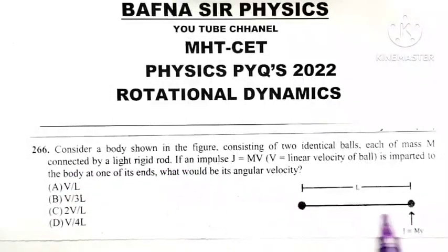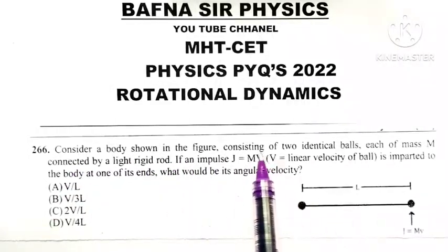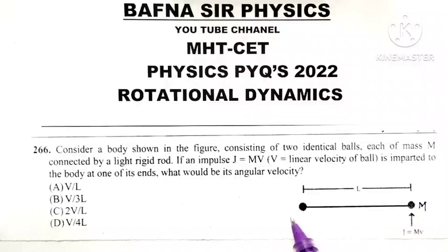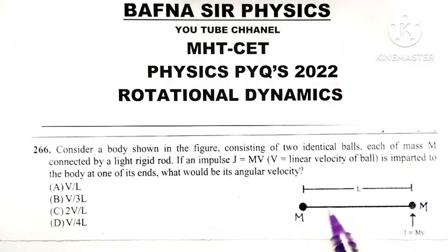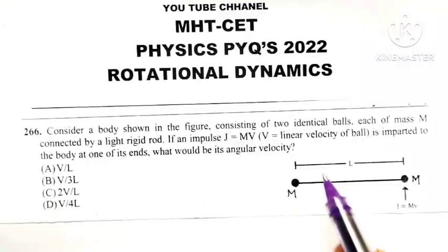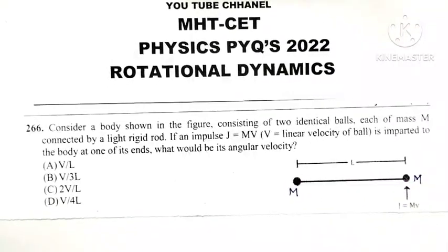Consider a body shown in the figure consisting of two identical balls, each of mass M. This is the first ball of mass M, second ball of mass M, and they are connected together with a light rigid rod. Length of the rod is L and its mass is negligible compared to the two bodies.